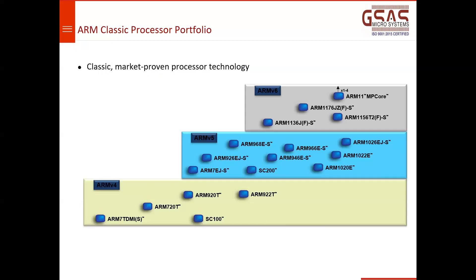Before coming to the current generation of ARM processors, let's talk about the ARM classic portfolio. We have various ARM architectures: ARM version 4, version 5, and version 6. These architecture version numbers have no direct correlation or relevance to the ARM processor core part numbers.